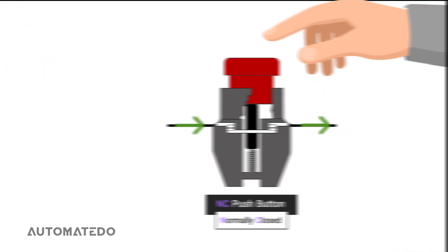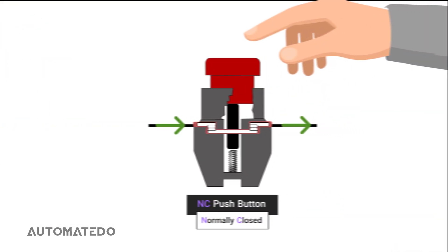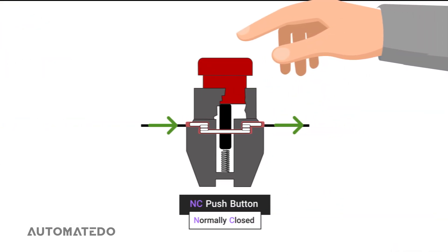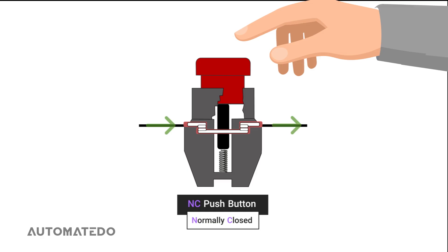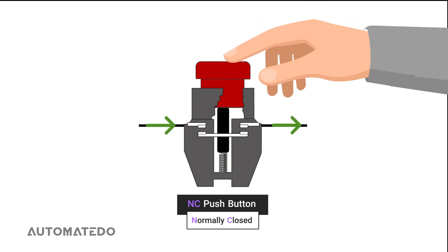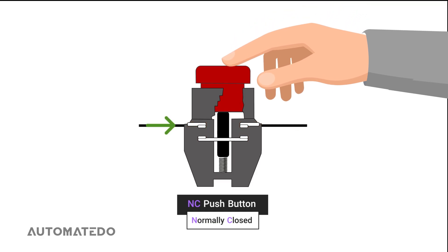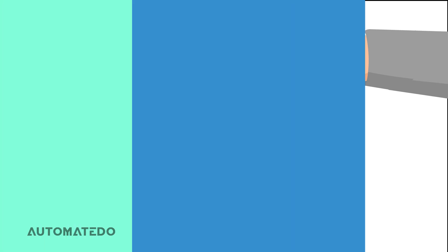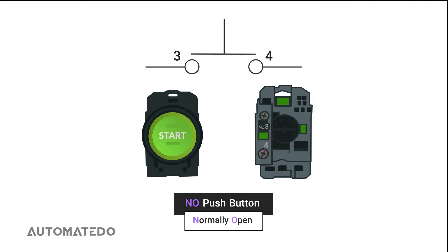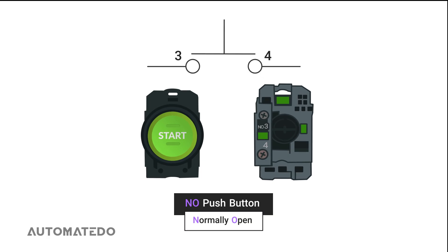On the other hand, normally closed push buttons maintain a closed circuit when not being pressed, allowing current to flow freely. Pressing the button forces the contacts apart, stopping the current by opening the circuit.